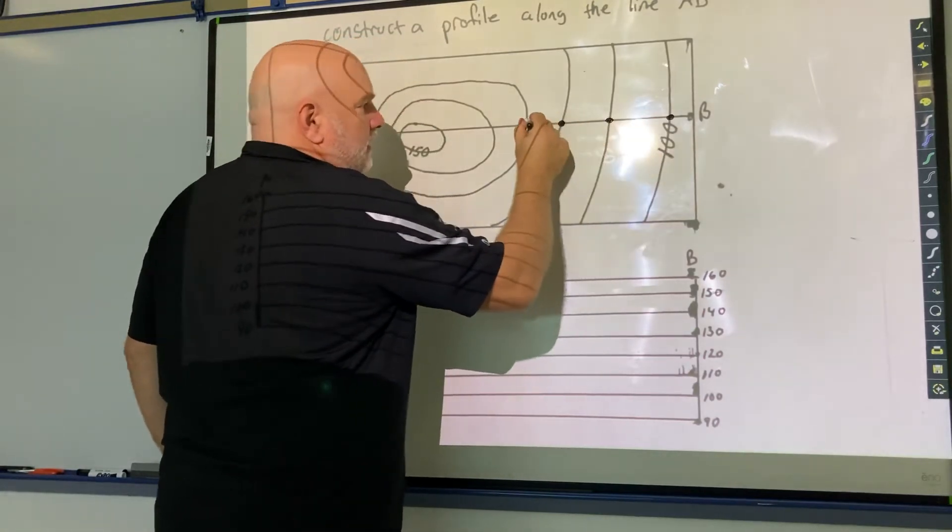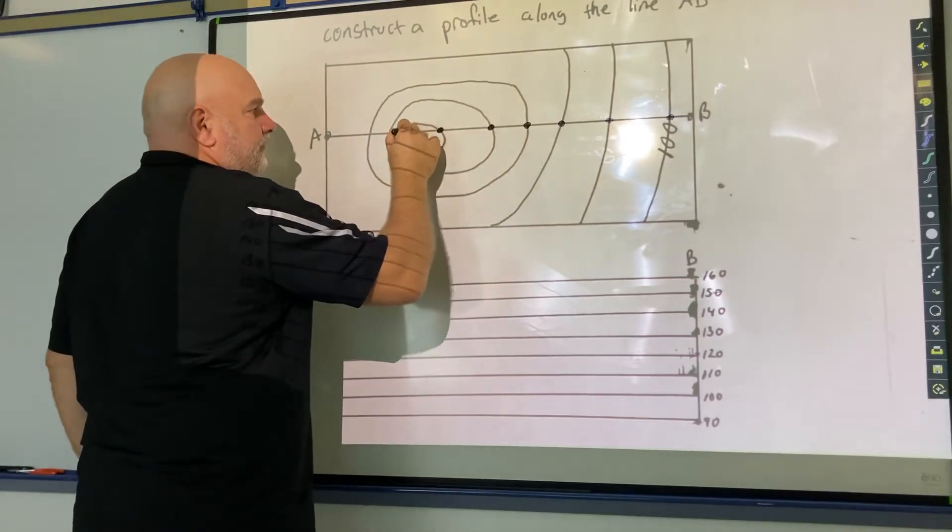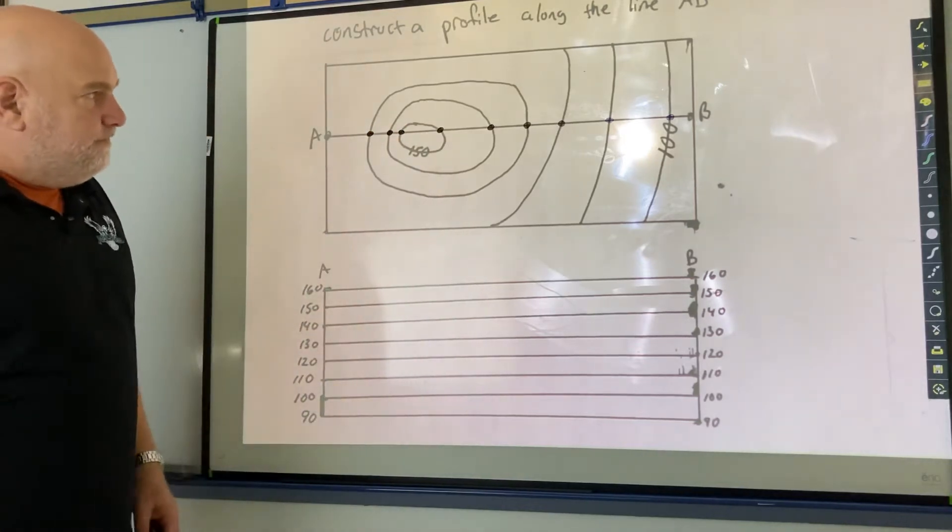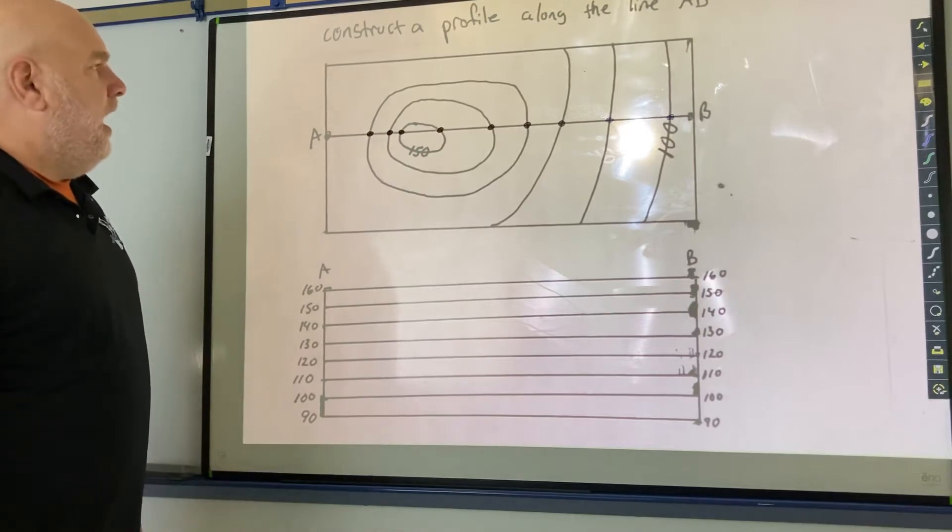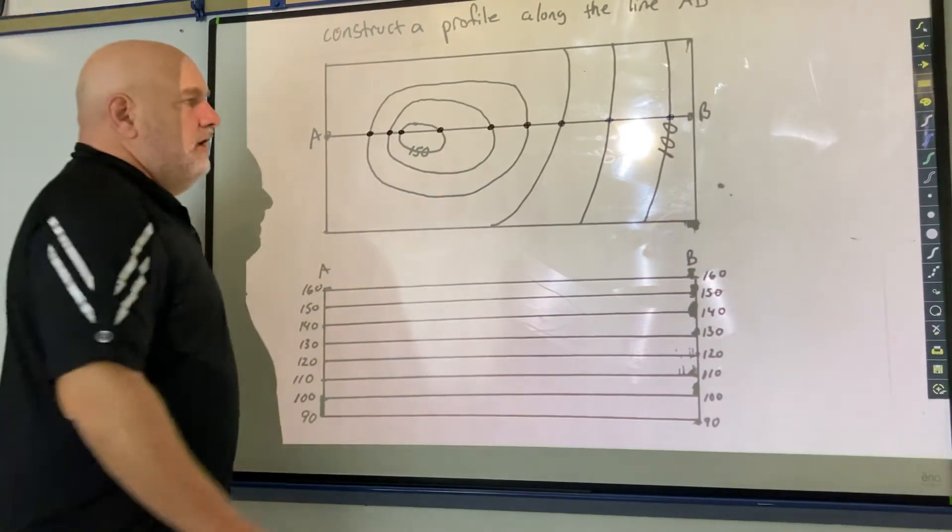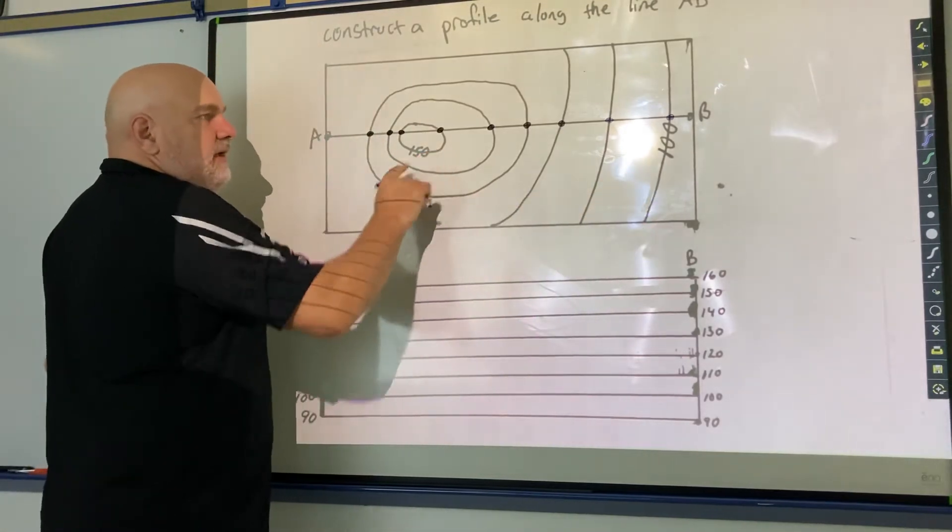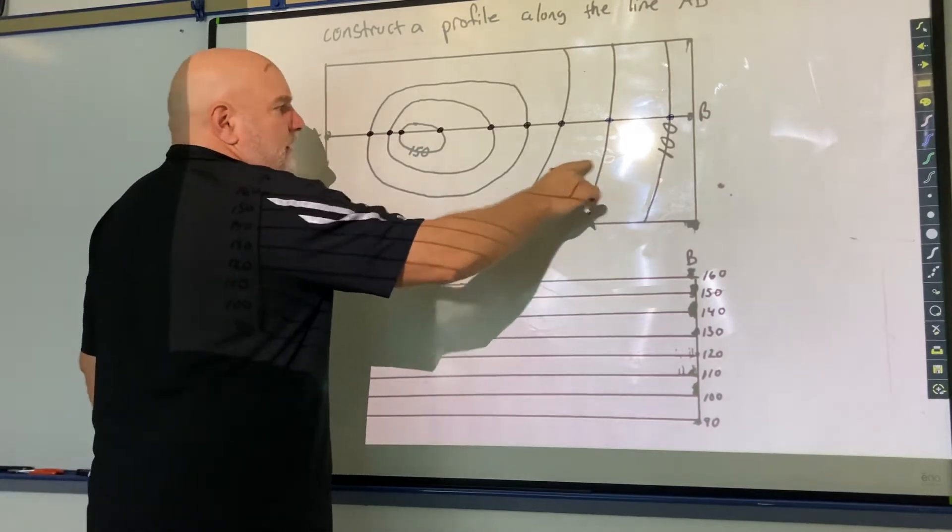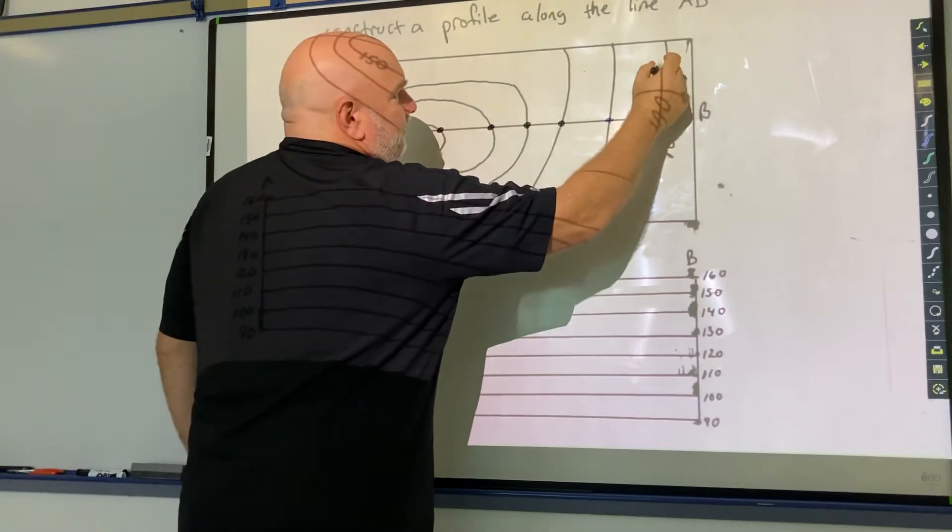Next, I think it's helpful if you label the contour lines. Now this particular map doesn't tell you what the contour interval is, but if that's 100 right there and that's 150, that means this must be going by 10. So that's 100, 110, 120, 130, 140, 150. I'm going to label those.